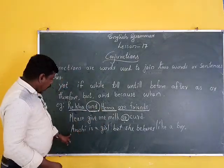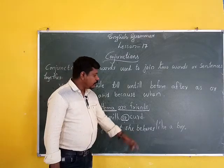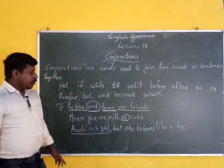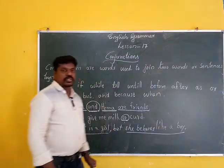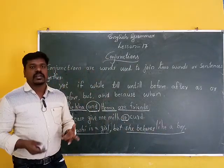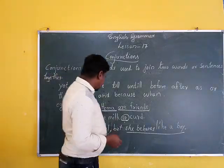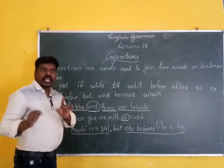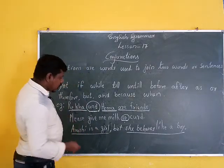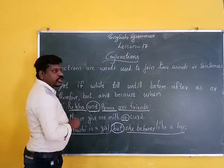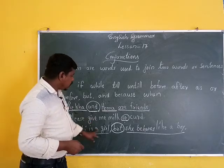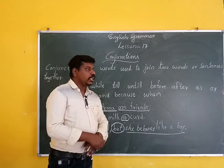Another example: 'Please give me milk or carbon.' Here the Conjunction 'or' joins the two words. Another example: 'Arushi is a girl but she behaves like a boy.' We have two small sentences — 'Arushi is a girl' and 'she behaves like a boy' — joined by the Conjunction 'but'.